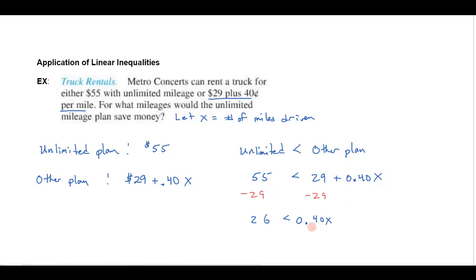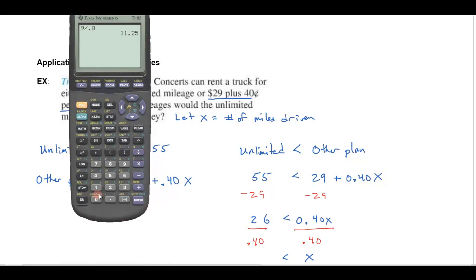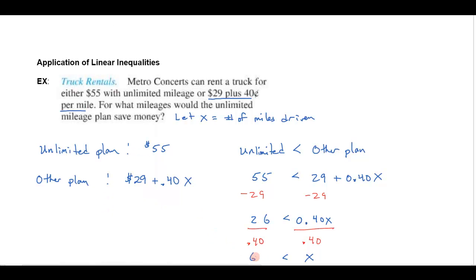Or if we want to be more mathematically correct, I put it at 0.4 and then I'll just divide both sides by that coefficient. I'll divide both sides by 0.4 and I'm not dividing by a negative so I don't have to reverse the inequality. So that's going to give me that my x value is greater than whatever 26 over 0.4 is. Let's go ahead and do that on our calculator.